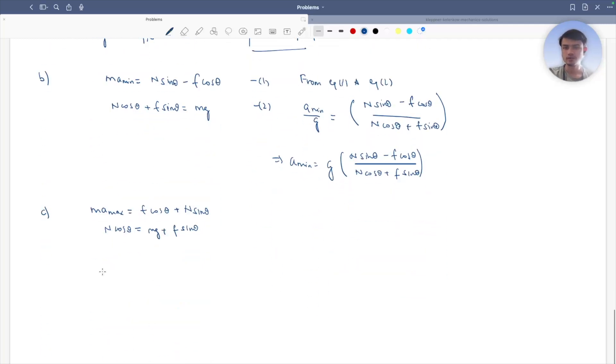So now, if I reshuffle them a little, that becomes m a max equals to f cos theta plus n sin theta, and here it will be mg equals to n cos theta minus f sin theta. So from these two equations.